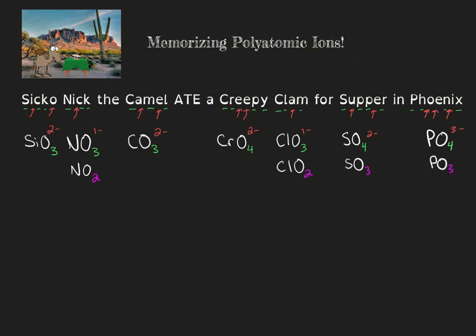What I get is the same polyatomic ion but instead of an -ate ending, it is -ite. So NO₂, 1− is nitrite. ClO₂, 1− is chlorite. SO₃, 2− is sulfite. And PO₃, 3− is phosphite.